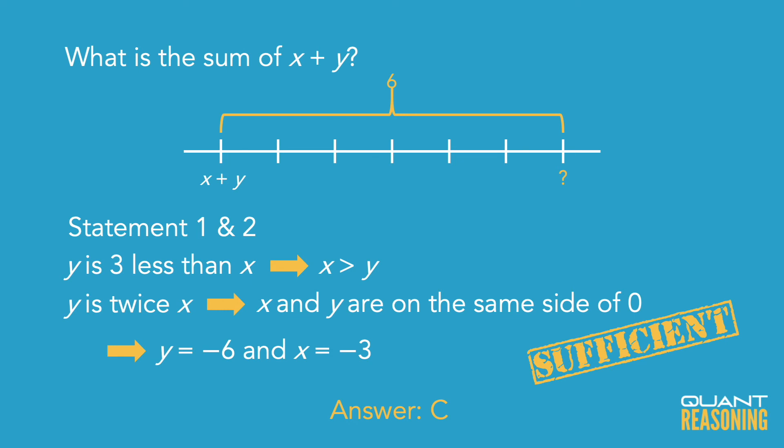So again, in this case, because we were given the relative order of x and y, we were able to infer which side of zero they're on, and for that reason there is only one possible answer to this question, and therefore the correct answer is C.